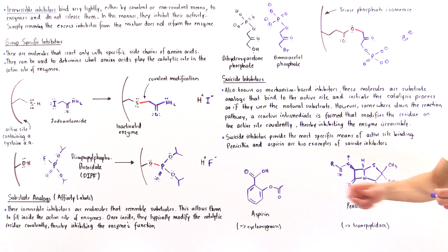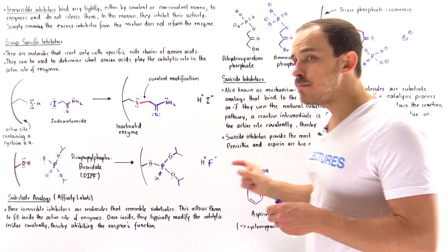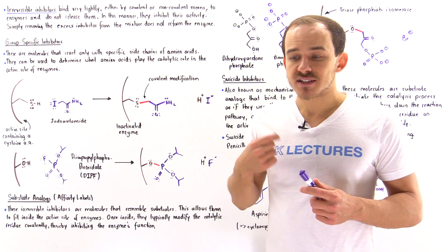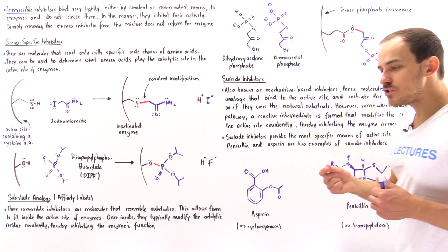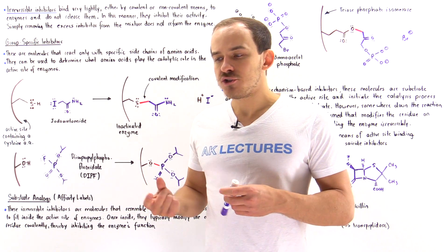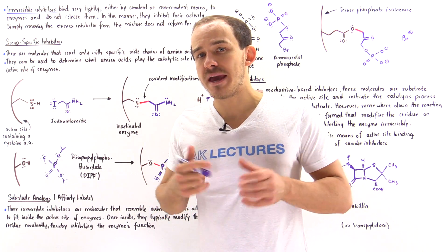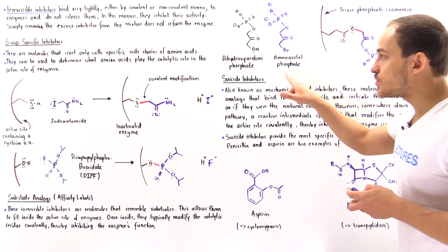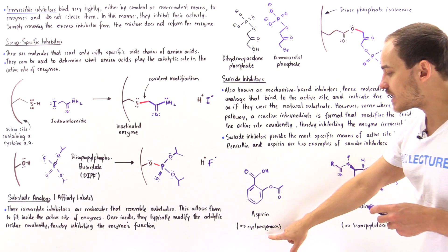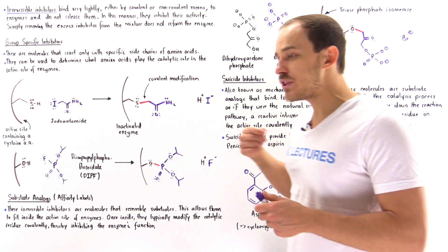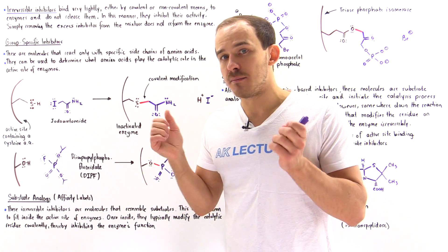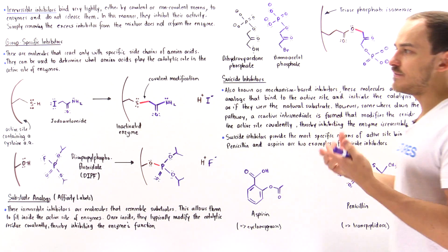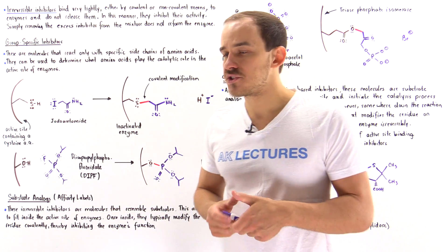Aspirin is a suicide inhibitor of cyclooxygenase, an enzyme that catalyzes the formation of signal molecules used in the inflammation process. When we ingest aspirin, it binds into the active site of cyclooxygenase, disabling the production of those signal molecules so that the inflammation process cannot proceed properly. This relieves pain, decreases headaches, and so forth.